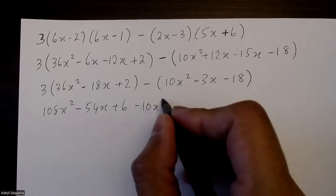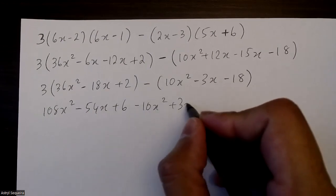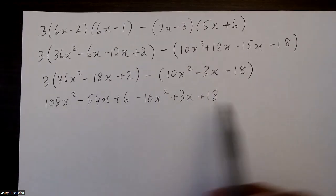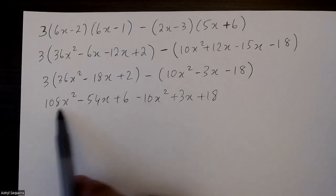My last step is to combine like terms again. So these two will give me 98x squared.